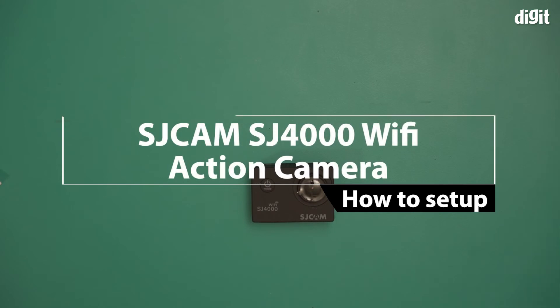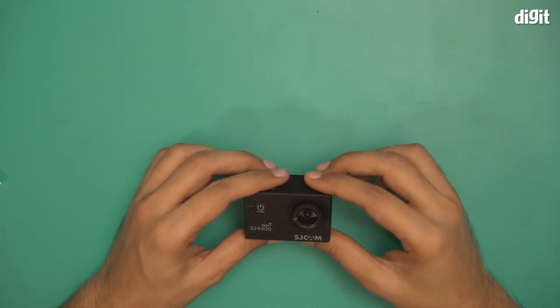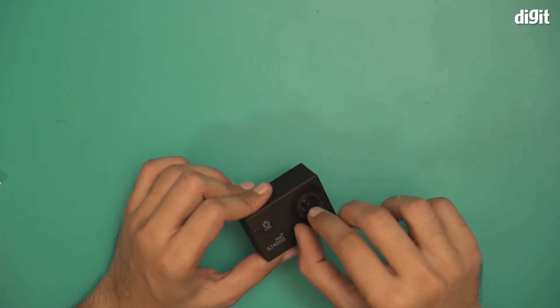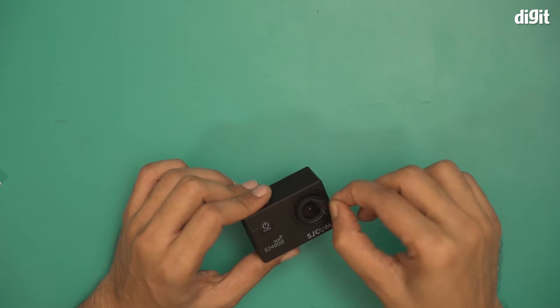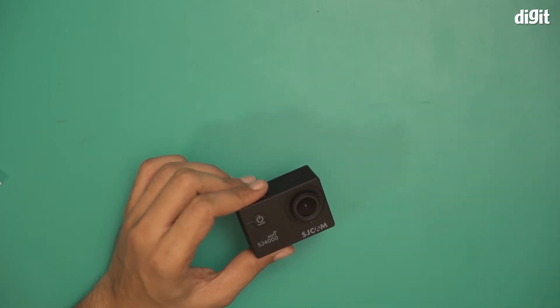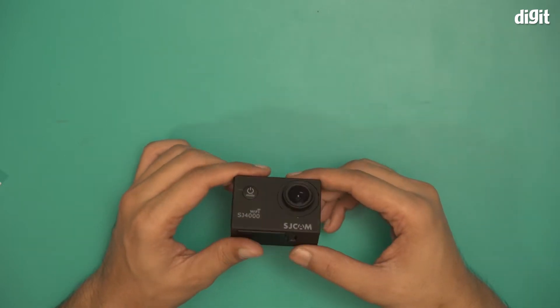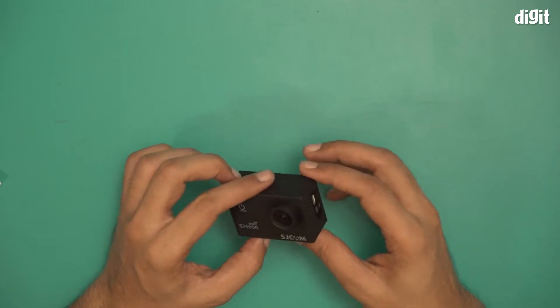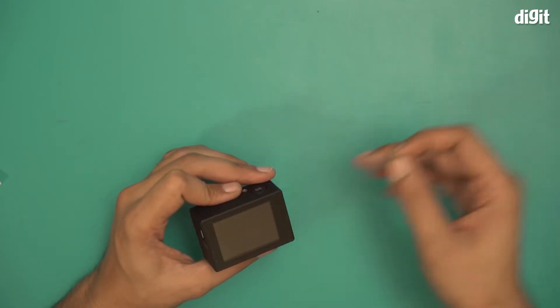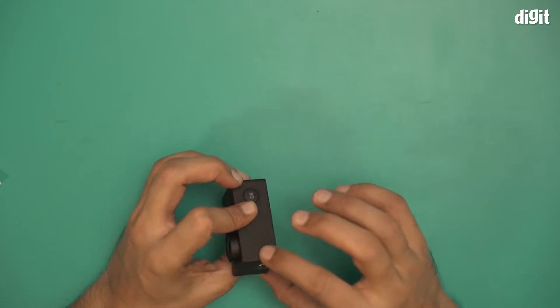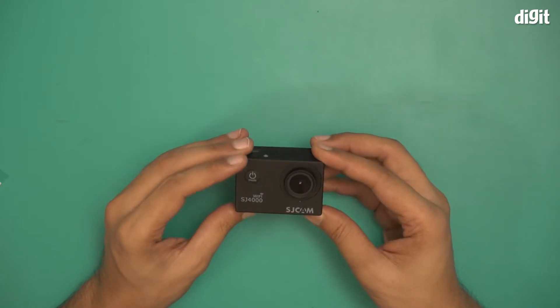In this video, I'm going to show you how to set up the SJCAM SJ4000 WiFi action camera. The setup will depend completely on how you plan to use it. I'm going to show you the setup menu of this particular camera, how to access it, and what the different options are.